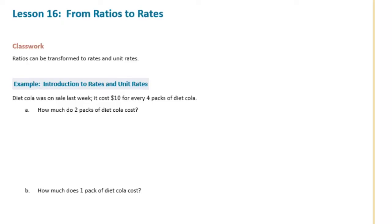6th grade module 1 lesson 16 classwork. Ratios can be transformed to rates and unit rates. Diet Cola was on sale last week. It cost $10 for every four packs of Diet Cola. How much do two packs of Diet Cola cost?